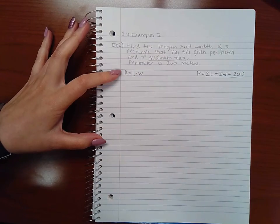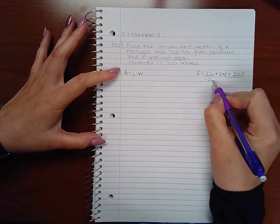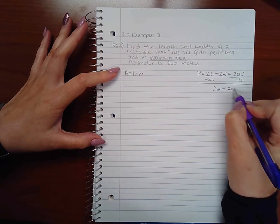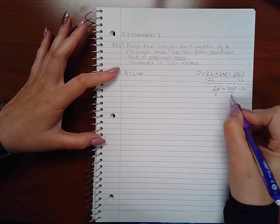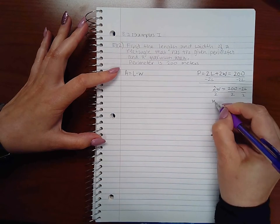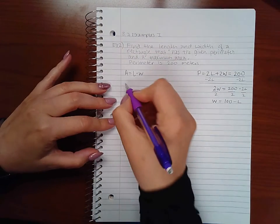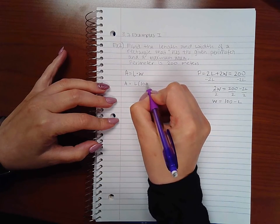So what I'm going to do is solve for W. I'm going to minus 2L on both sides. I get 2W equals 200 minus 2L. Then I'm going to divide both sides by 2, so I get W equals 100 minus L. And so then I'm going to plug this in, so L times 100 minus L.